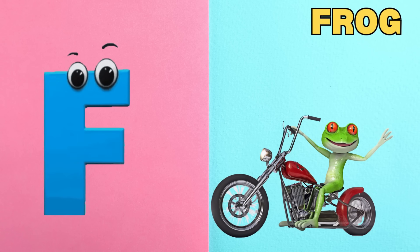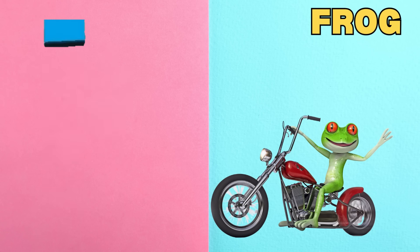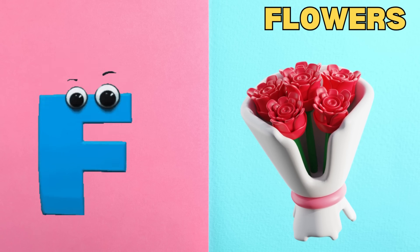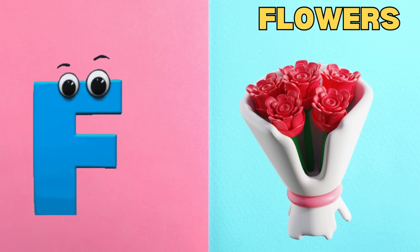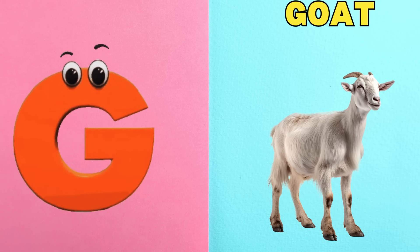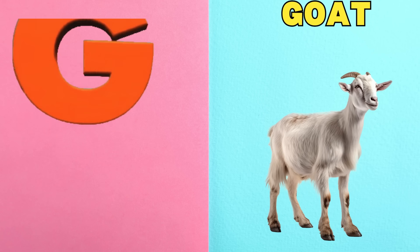F is for Frog. F, F, Frog. F is for Flower. F, F, Flower. G is for Goat. G, G, Goat.